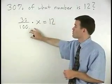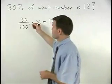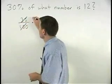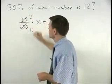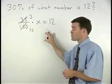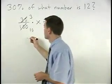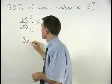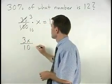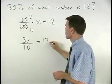Notice that thirty over one hundred can be reduced to three over ten. So rewriting our problem we have three x over ten equals twelve.